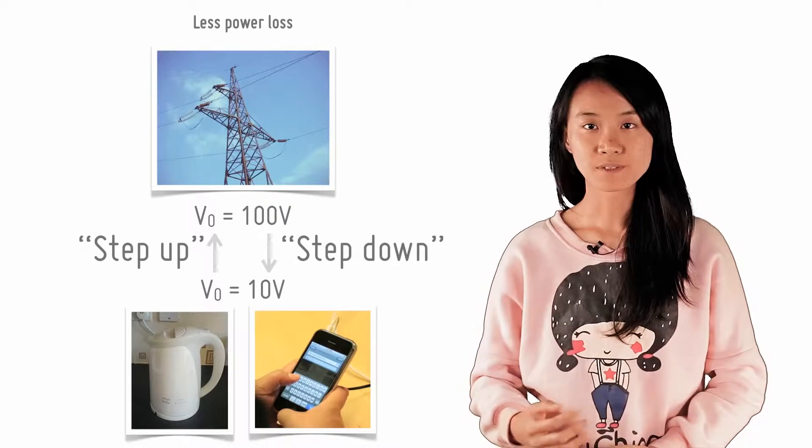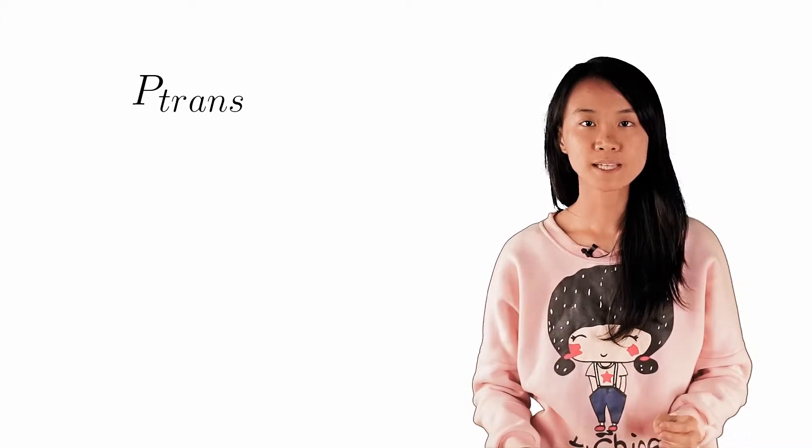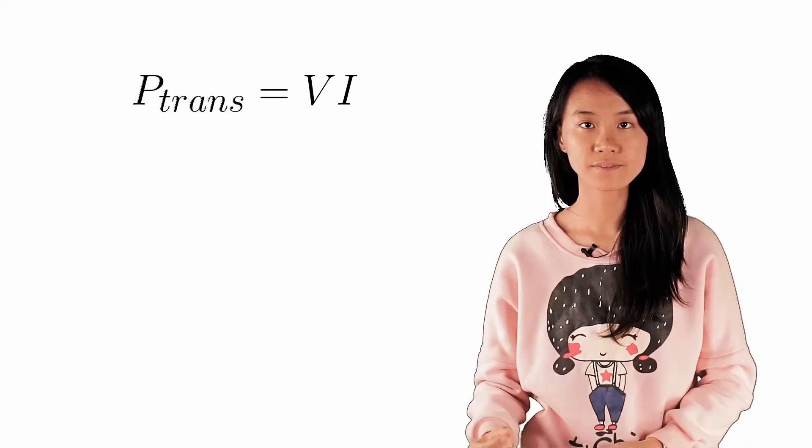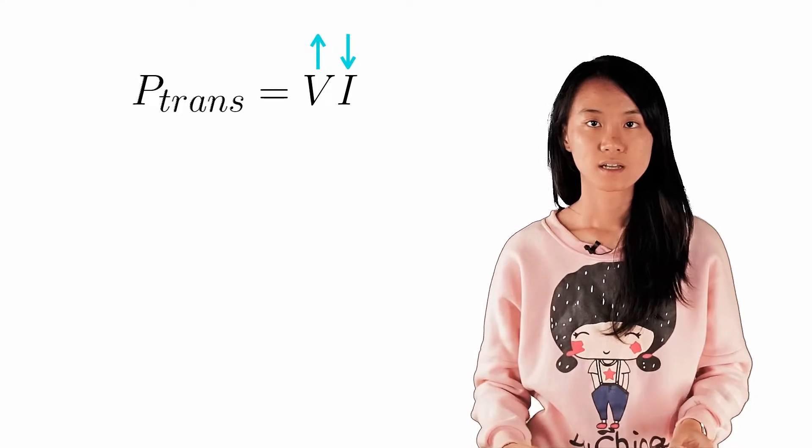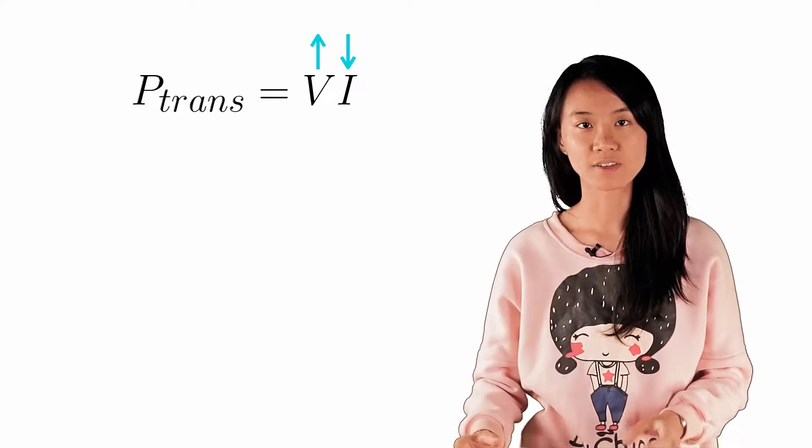To understand why, let us suppose that you want to transmit some amount of power P over a long distance. Since P equals VI, you can choose to use either a high voltage and low current, or a low voltage and high current.